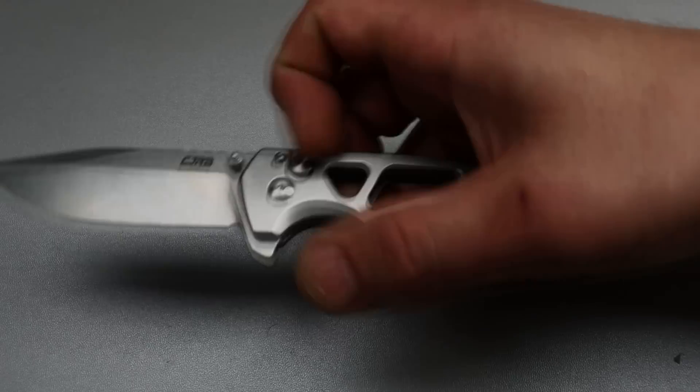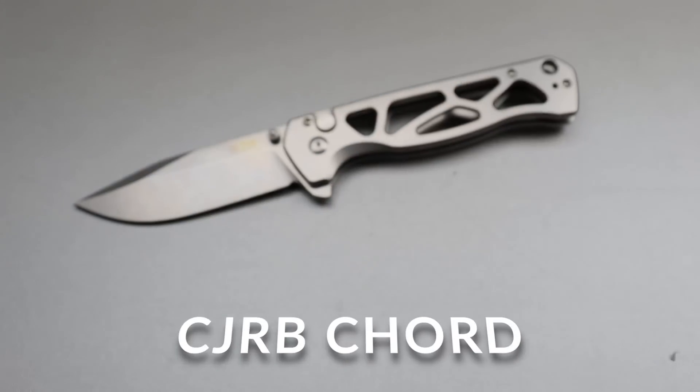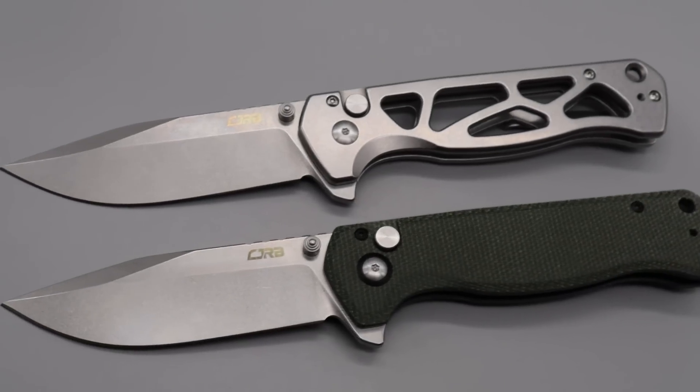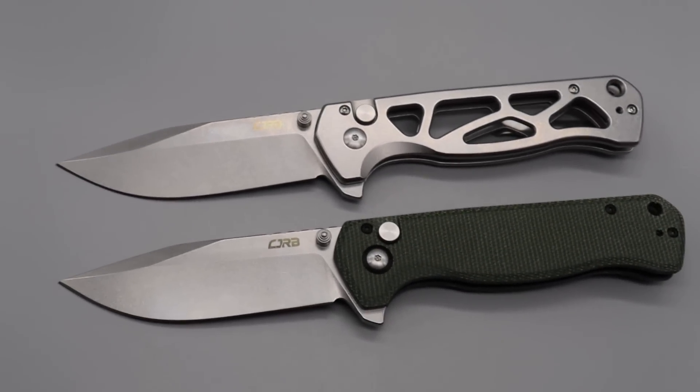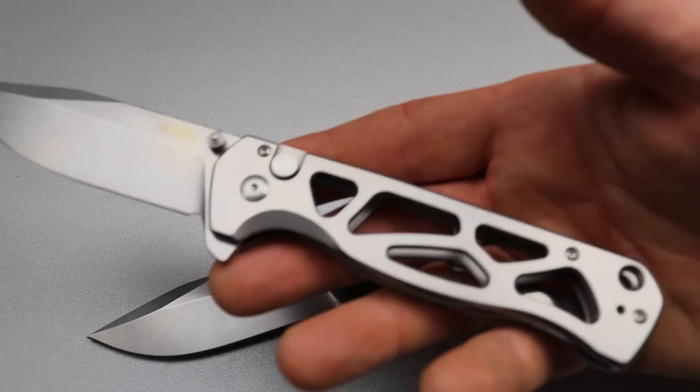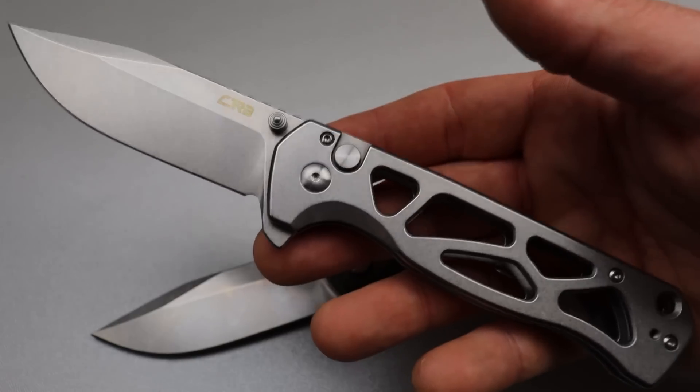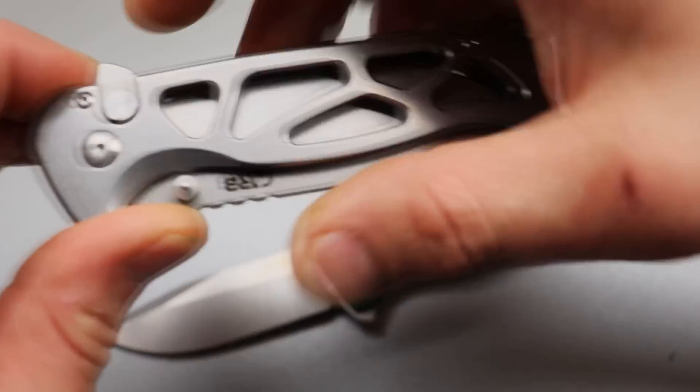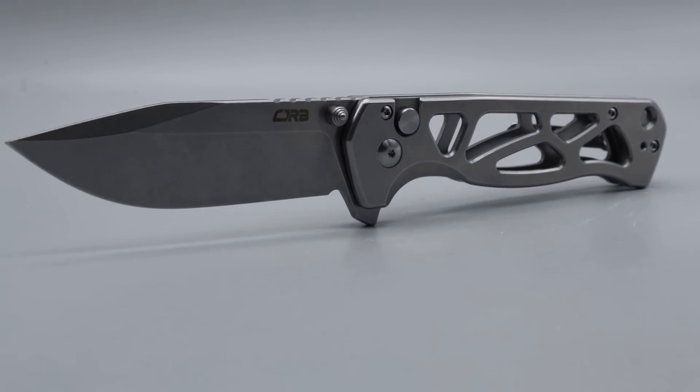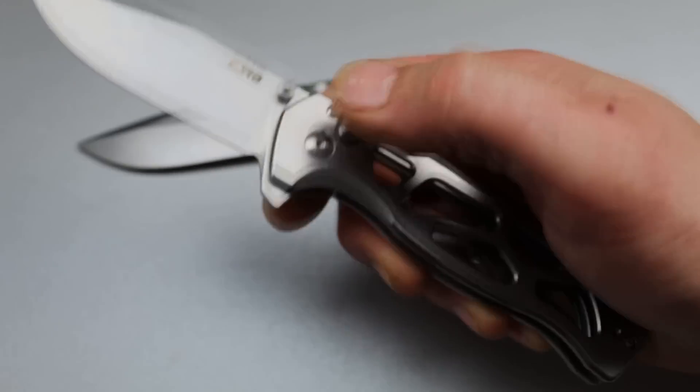Next is the CJRB Cord. Now the CJRB Cord uses AR-RPM9 steel and obviously comes in different versions, like most of the knives on this list do. But my favorite out of these two is this steel bodied one, even though I'm not a fan of holes in my handles. I've never liked this type of handle.